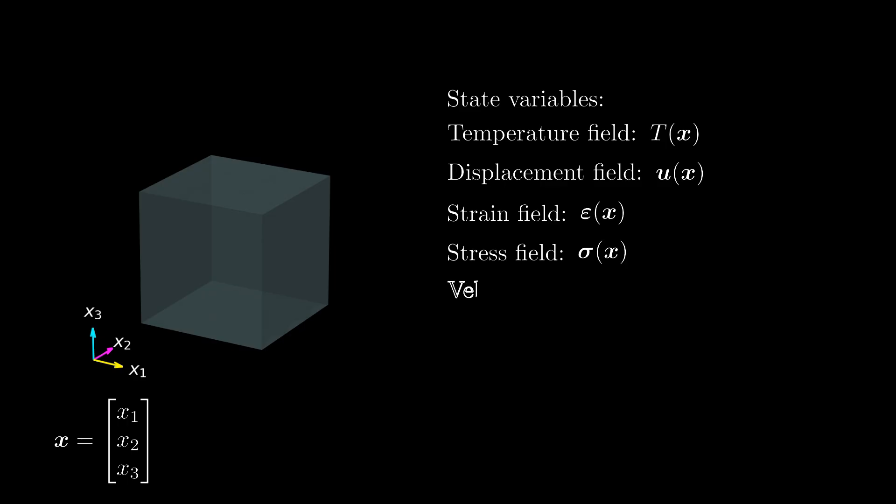More examples include the velocity field, the pressure field, the electric or magnetic potential field, and many more. It highly depends on the physical problem under consideration which of these fields should be chosen as state variables.